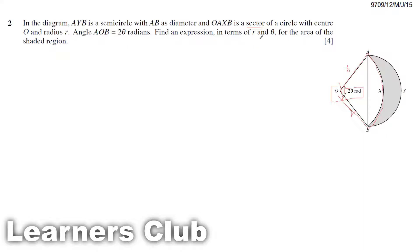We need to find an expression in terms of R and theta for the area of the shaded region. Before finding the area of the shaded region, we have the diameter AB for the semicircle, so we need to find its radius. I'm splitting the angle into half — taking the radius as R and the half-angle as theta, so half of 2 theta is theta.